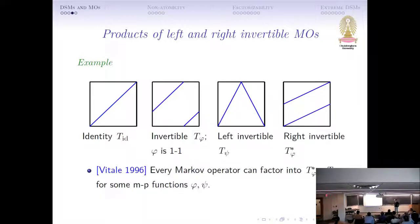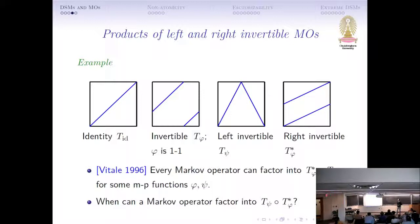Now, in 1996, there's a surprising result that says if you have a Markov operator, you can always factor it into a right invertible multiplied with a left invertible one. This is a very surprising result. The question is when can a Markov operator be written as a product of a left and a right invertible? This would not be every Markov operator — it's going to be just a subclass of operators. So what I'm doing here is just the opposite order, that's all.